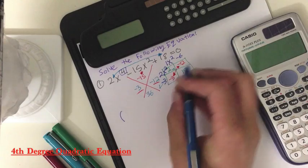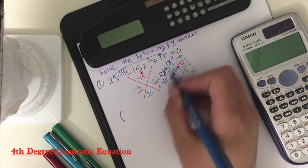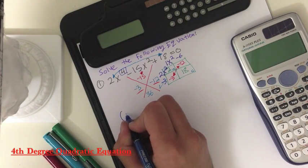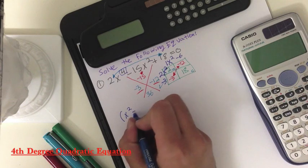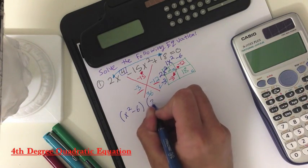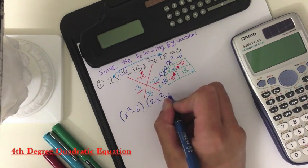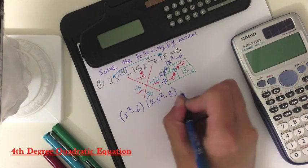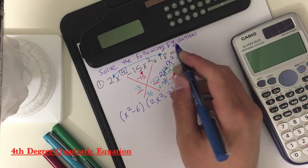So you basically pull down these two equations and put them in parentheses. So it will be x squared minus 6, and then 2x squared minus 3, equals 0, just like the original equation.